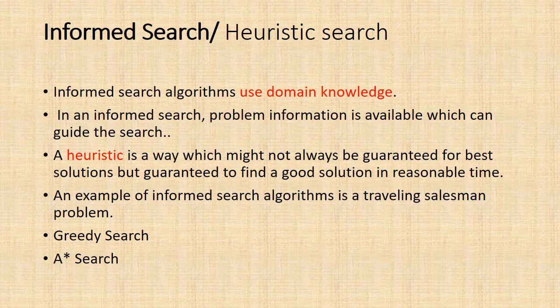A heuristic is a way that might not always be guaranteed for the best solutions but guaranteed to find a good solution in a reasonable time. Examples of informed search algorithms are traveling salesman problem, greedy search, A* search, etc.